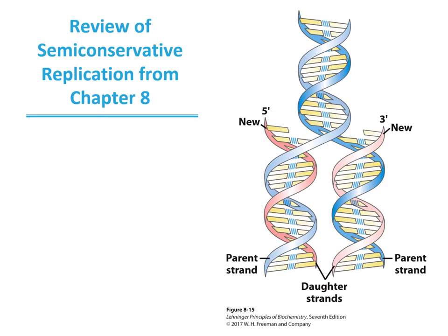Here's a quick review of semi-conservative replication from Chapter 8. The pre-existing parent strand, shown in blue, is separated, and each strand is copied into a daughter strand shown in pink. The two complementary strands are copied to generate two additional double-stranded DNA molecules, where each parent strand has a complementary daughter strand.